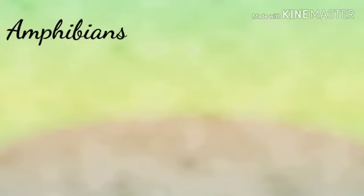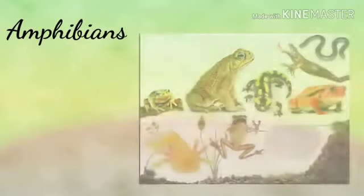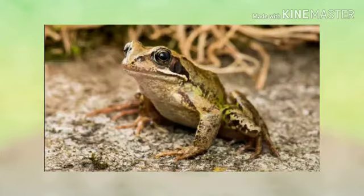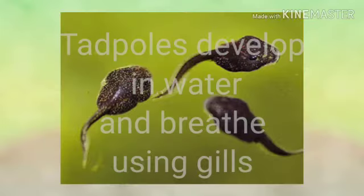Amphibians include frogs, toads, newts, and salamanders. Amphibian adults live on land, and they breathe using lungs. They have four limbs. Amphibians lay eggs in the water, and their young are called tadpoles.